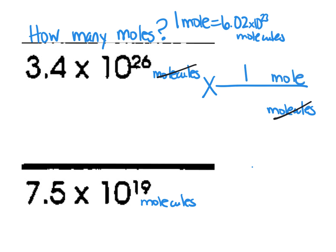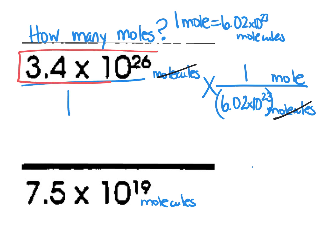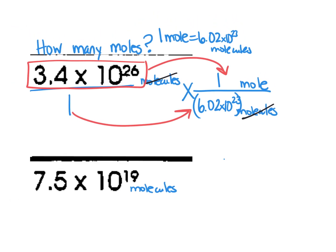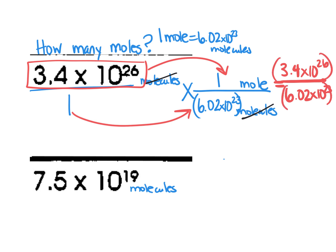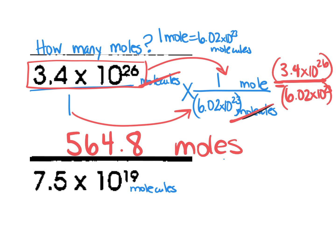The relationship we know is that one mole is equal to 6.02 times 10 to the 23rd molecules. So we take 3.4 times 10 to the 26th divided by 6.02 times 10 to the 23rd. Since molecules cancels out, this tells us how many moles we have. When I put that in my calculator, I get 564.8 moles.